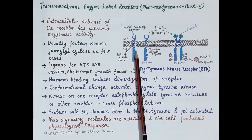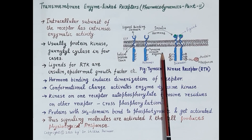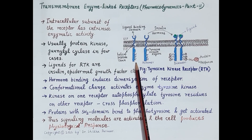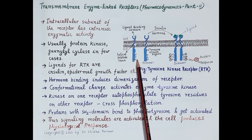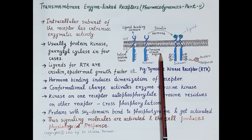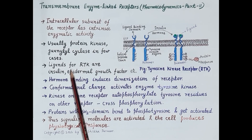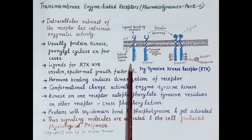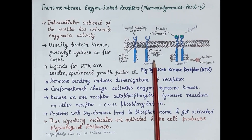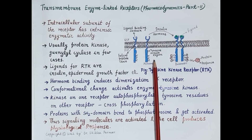This region of the intracellular subunit has intrinsic enzymatic activity. This is the region where usually the enzyme tyrosine kinase is found to be attached. In this region of the receptor are present inactive tyrosine residues, depicted here by the capital letter T. In the majority of cases, the enzyme or protein tyrosine kinase is found to be attached with these receptors; however, in a few cases, the enzyme guanylyl cyclase is found to be attached to the intracellular subunit of the receptor.